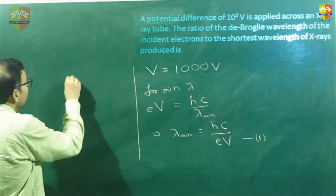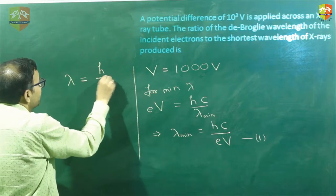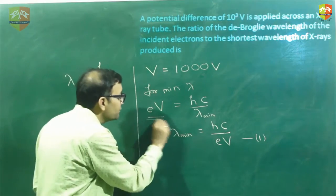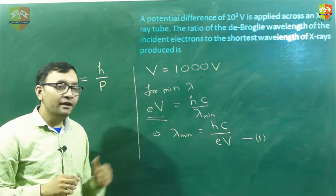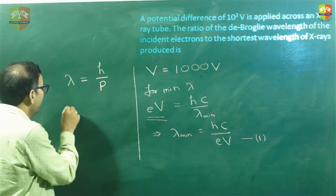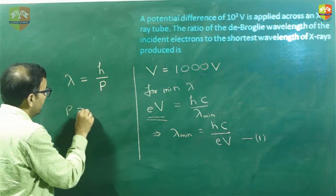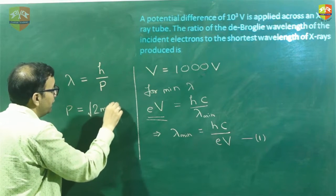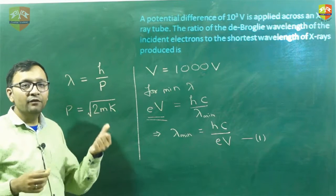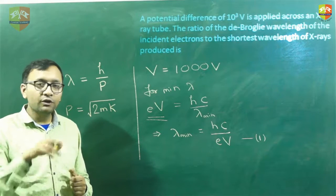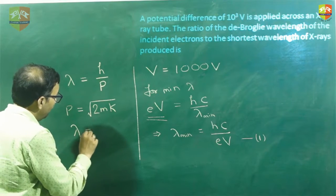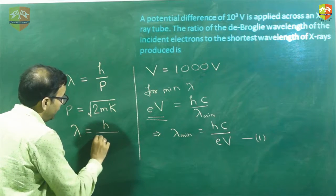Now let us find the de Broglie wavelength of the electron. The de Broglie wavelength is given as h divided by momentum p. Momentum is not directly given, but e times v is the kinetic energy. If kinetic energy is given, we can find momentum. Momentum squared equals 2m times kinetic energy, so taking the square root gives m times v, which is momentum. So the de Broglie wavelength of the electron becomes h divided by the square root of 2mK.